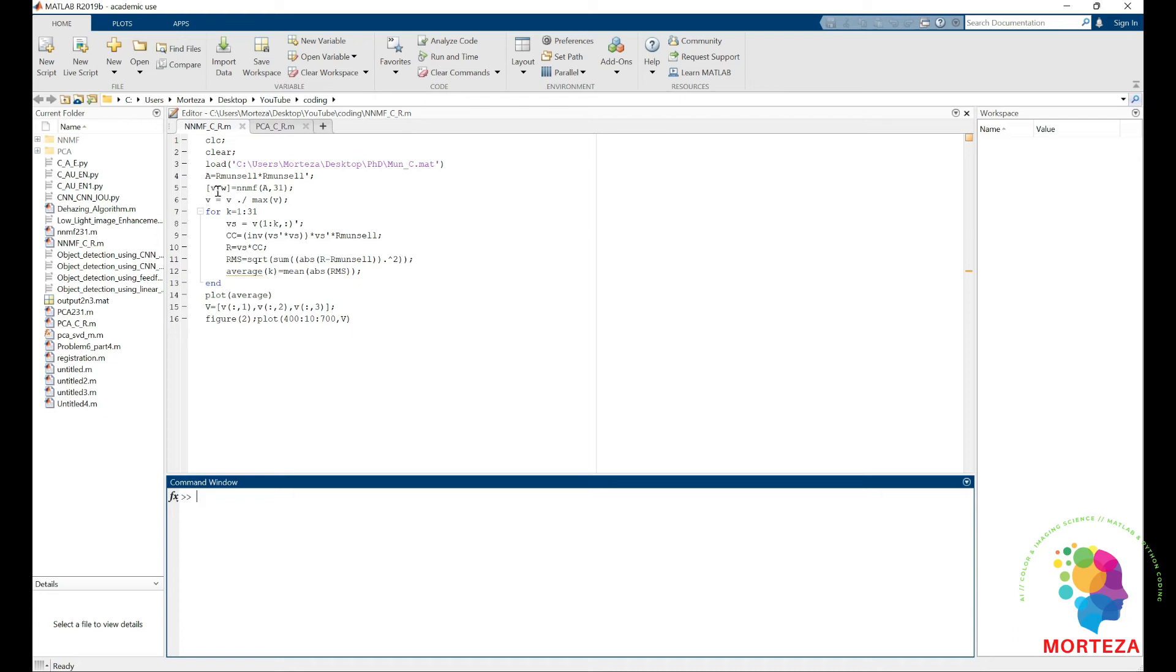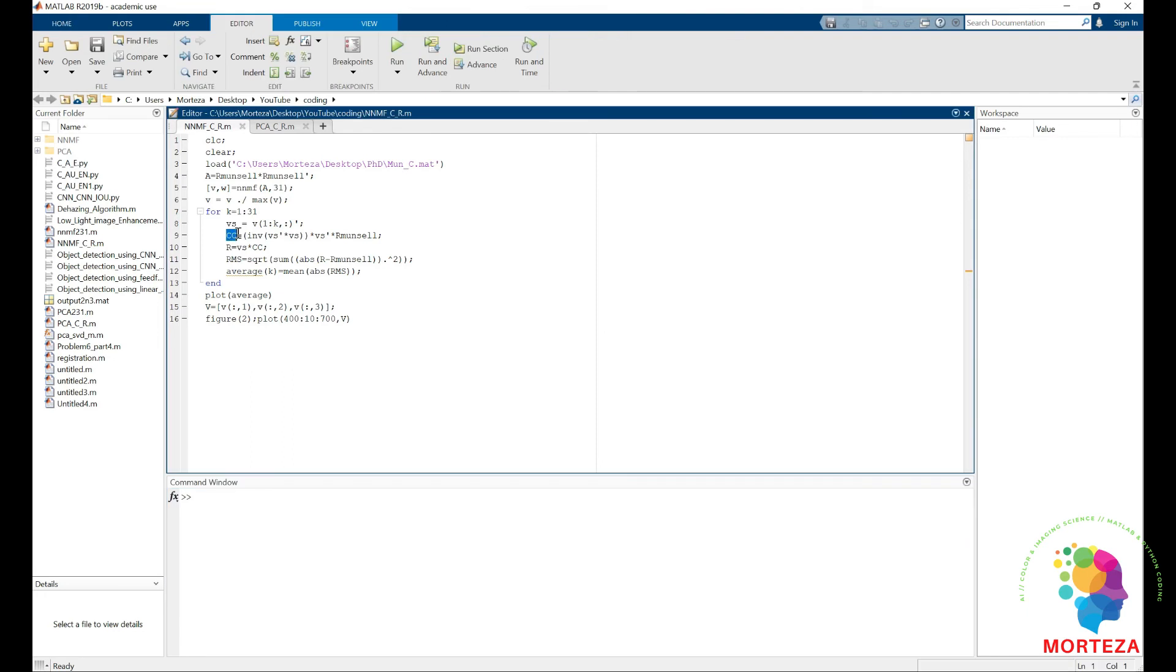And the V are the basis functions which are normalized with respect to the maximum values in each vector. And then we go down, we keep adding to the number of eigenvectors or basis functions and we compress them. This is the C. C is the compressed version of our data, which is Munsell. And then we reconstruct them again.